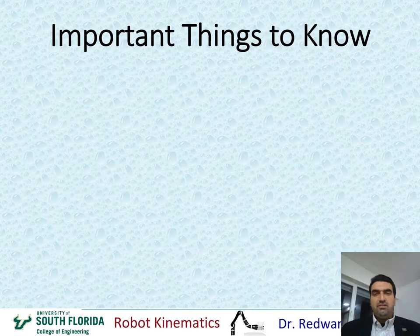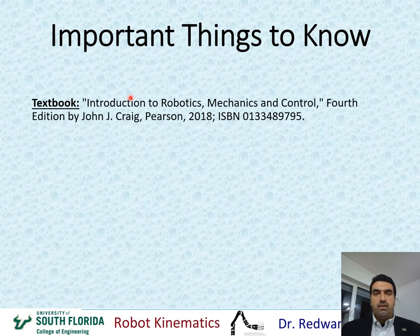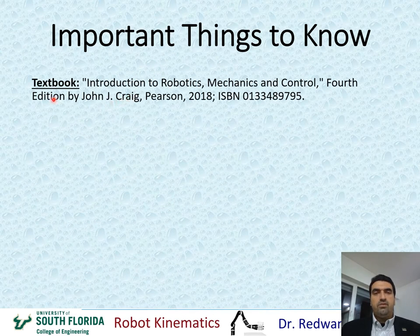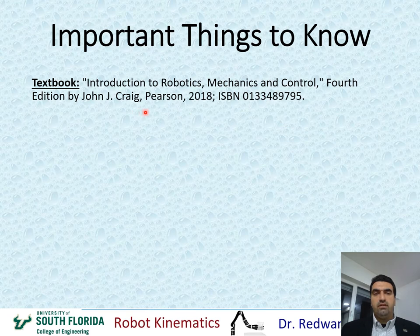I'd like to talk about a few important things to know or prepare ahead of time before you start this course. The textbook is Introduction to Robotics, Mechanics, and Control, fourth edition by John Craig, and the ISBN number is shown here. You can find it on Amazon or any other bookstore of your choice.